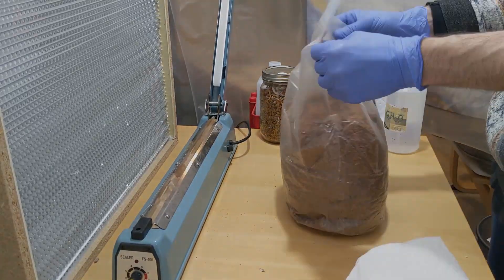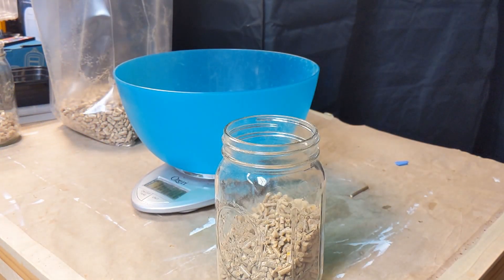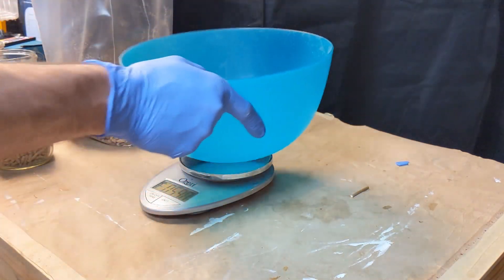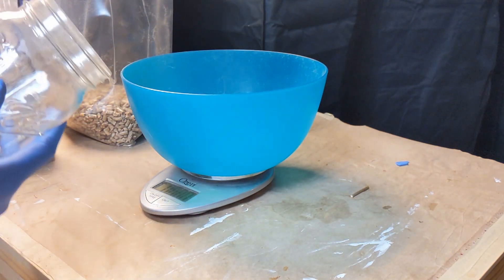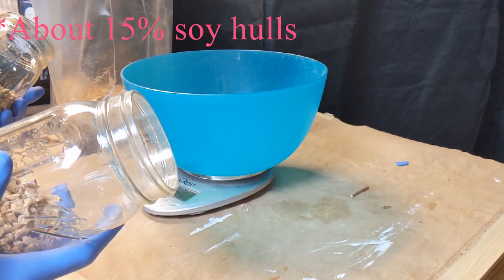This is how I make my substrate. I will grab a bowl, a scale, and I do kind of like a 50-50 master's mix, but I don't do 50-50, I do like 70-30.